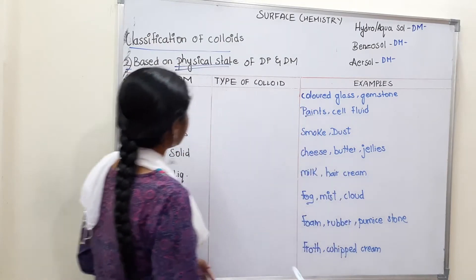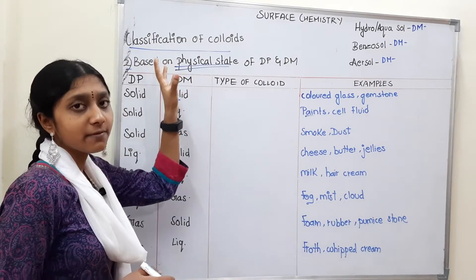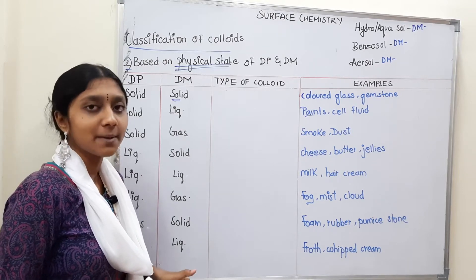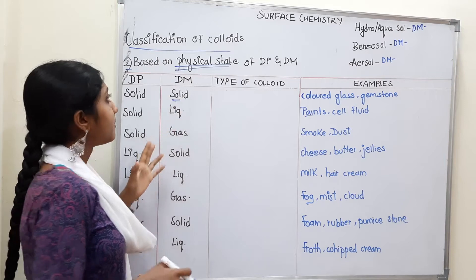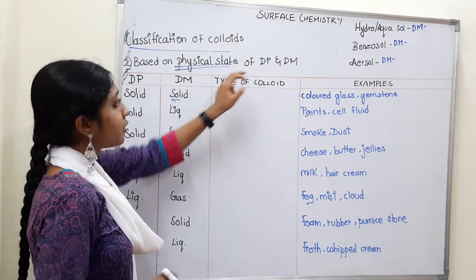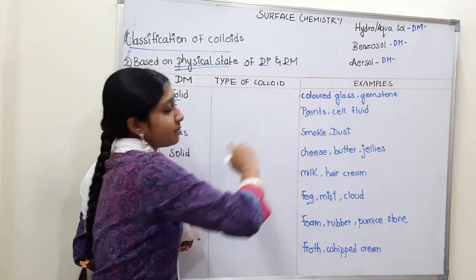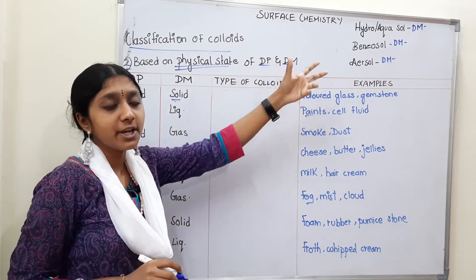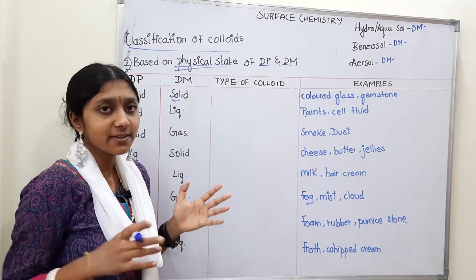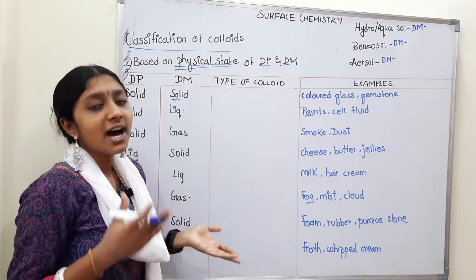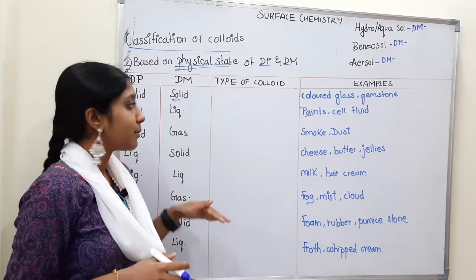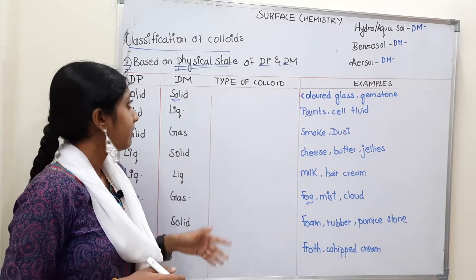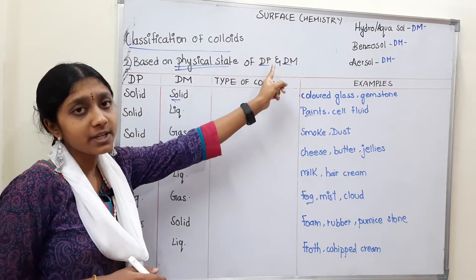We are going to see the classification of colloids — that is the second one. This is already uploaded in the description of the video. Based on the physical state of dispersion phase and dispersion medium, there are 7 different types of colloids.